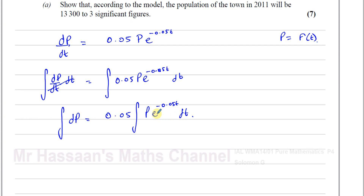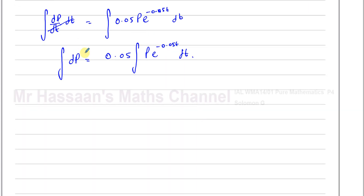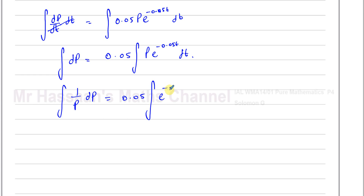Now I must separate the variables. Anywhere I see p, it goes on the side with dp; anywhere I see a term in t, it goes on the side with dt. Dividing both sides by p, I'm left with: the integral of 1 over p with respect to p equals 0.05 times the integral of e to the power of negative 0.05t with respect to t.